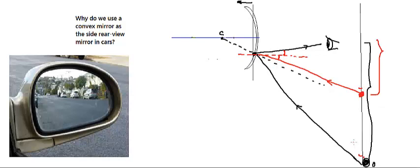Since this range increases with a convex mirror, we prefer to use a convex mirror as a reflecting rear-view mirror. A similar thing happens on the right-hand side as well: rays from objects placed there fall onto the mirror and reach the eye. In the case of a plane mirror, only objects up to a limited range are visible, whereas with a convex mirror we can see far beyond that range.